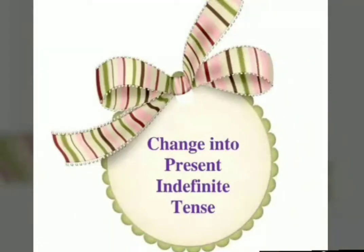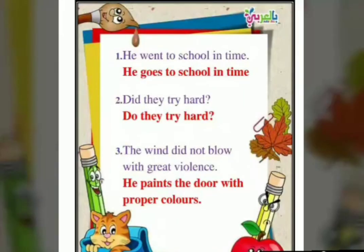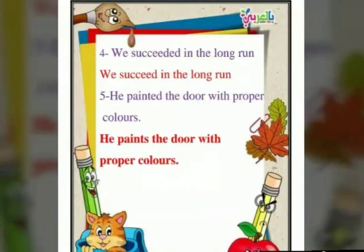Now we have another activity. We have to change some sentences into present indefinite tense. Sentence one: He went to school in time — present indefinite: He goes to school in time. Number two: Did they try hard? — present indefinite: Do they try hard? Number three: The wind did not blow with great violence — present indefinite: The wind does not blow with great violence. Number four: We succeeded in the long run — present indefinite: We succeed in the long run. Number five: He painted the door with proper colors — present indefinite: He paints the door with proper colors. All these sentences you will have to do.